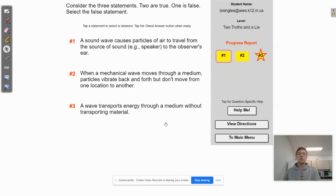When a mechanical wave moves through a medium, particles vibrate back and forth, but don't move from one location to another. Again, we just talked about that. And number three, a wave transports energy through a medium without transporting material. Wow. So we just covered all this in our little chat there. So this is a quick one.